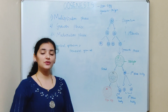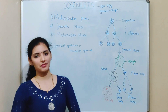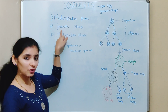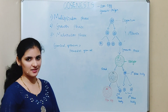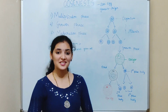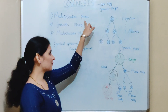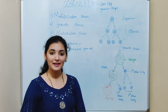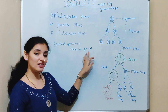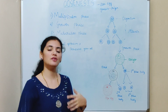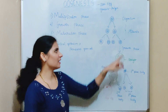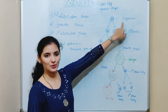The process of oogenesis mainly takes place in three phases: multiplication phase, growth phase, and maturation phase. We will discuss those phases one by one. In the first step, the multiplication phase, the primordial germ cells undergo continuous mitotic division and produce a cell known as oogonium.